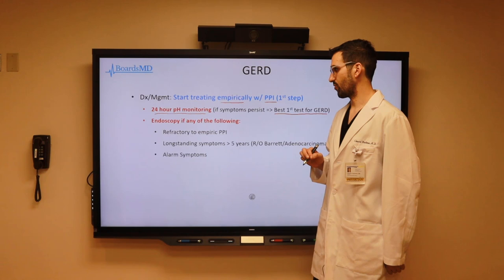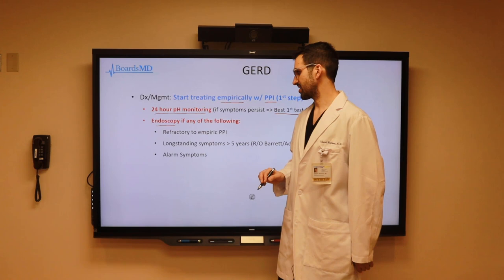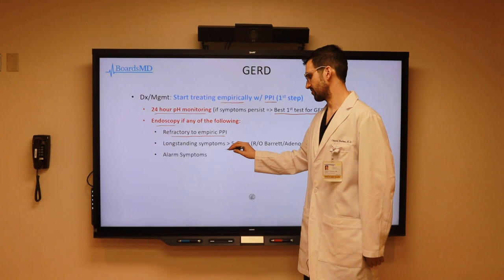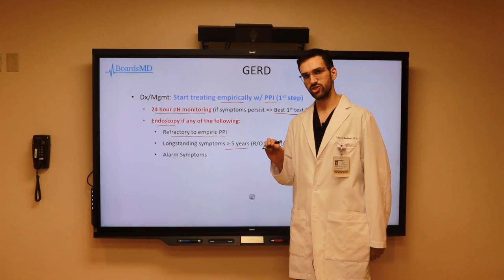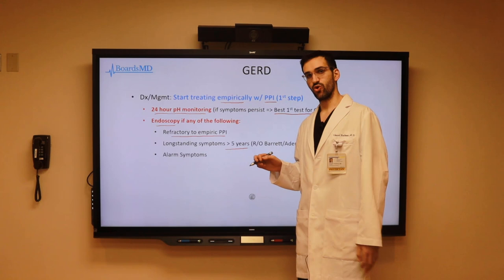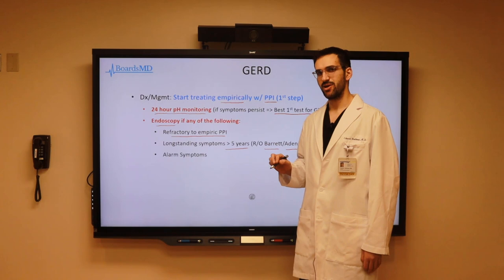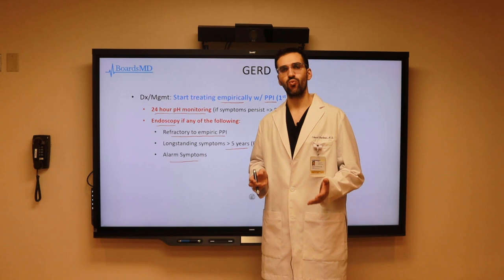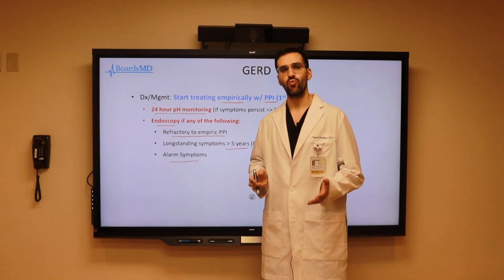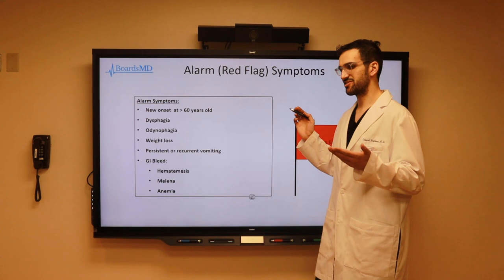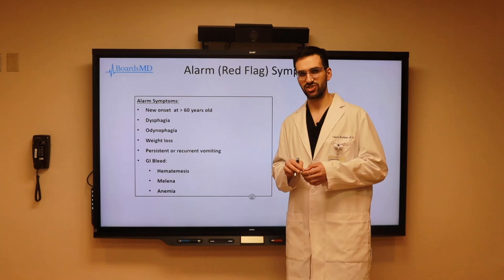Beyond this, we can obtain an endoscopy in a few key situations: first, if the patient is refractory to empiric PPI therapy; second, if the patient has long-standing symptoms greater than five years — in this scenario we want to rule out dysplasia and cancer, specifically Barrett esophagus and adenocarcinoma of the esophagus. We should also get an endoscopy when a patient exhibits alarm symptoms. This calls into question what are considered alarm symptoms in a patient with gastroesophageal reflux disease.